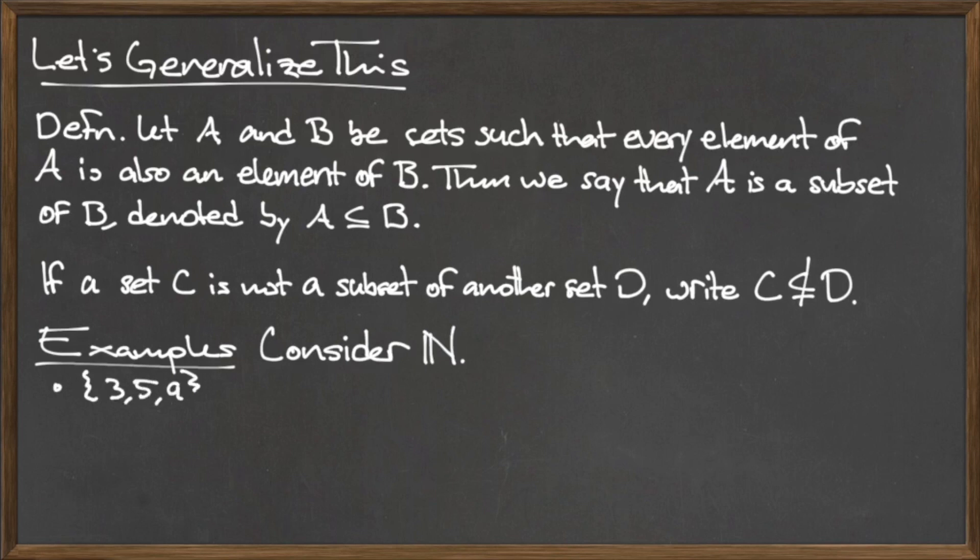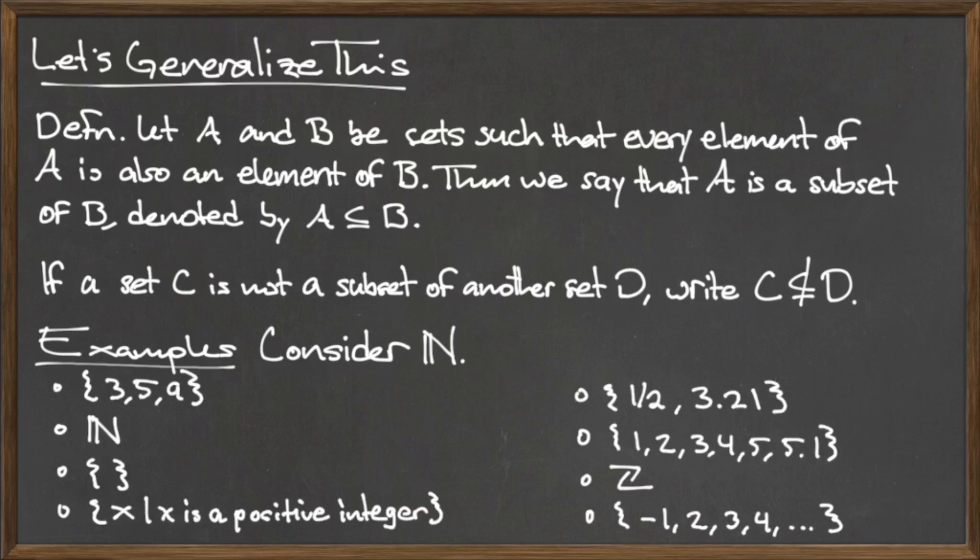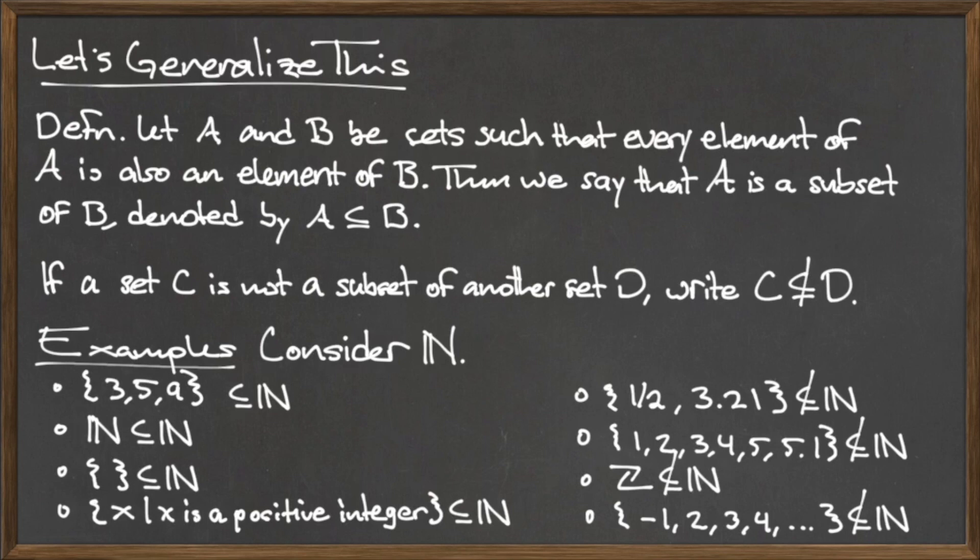To illustrate this idea, let's consider the natural numbers. All of the sets on the left are subsets of the natural numbers, while all of the sets on the right are not subsets of the natural numbers. There are two important notes to make about the sets on the left that are subsets of the natural numbers.